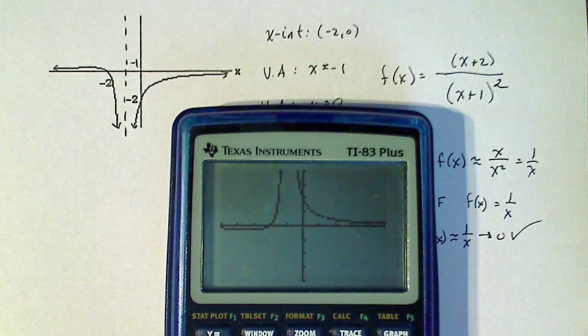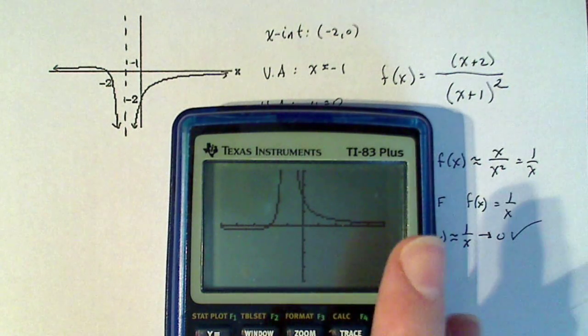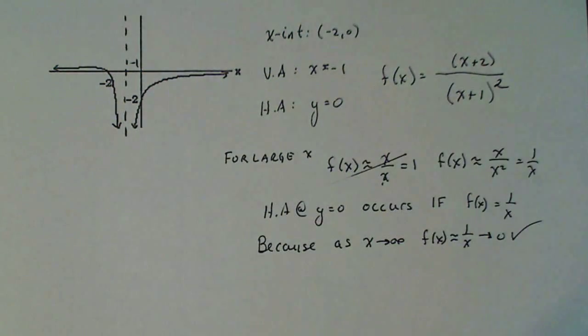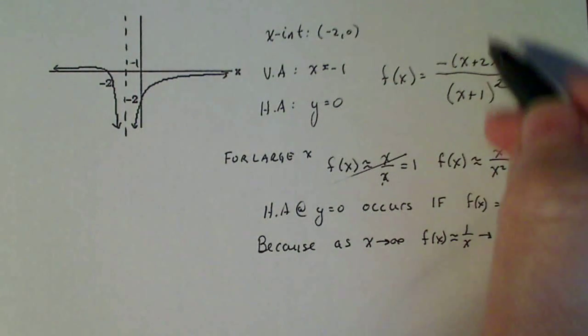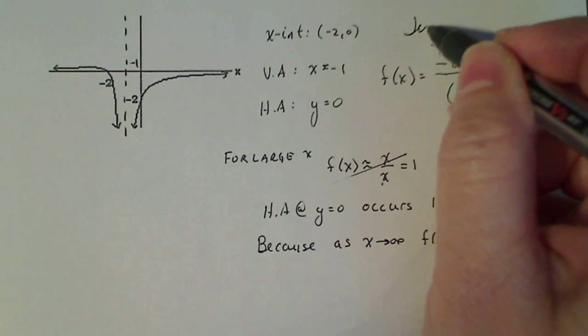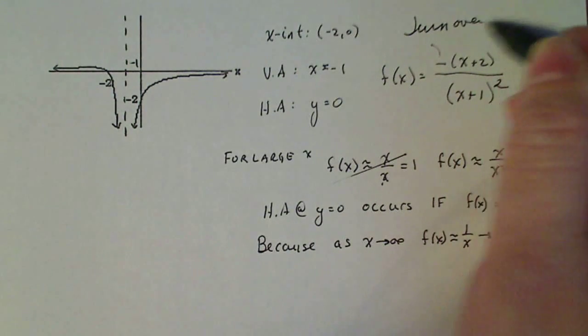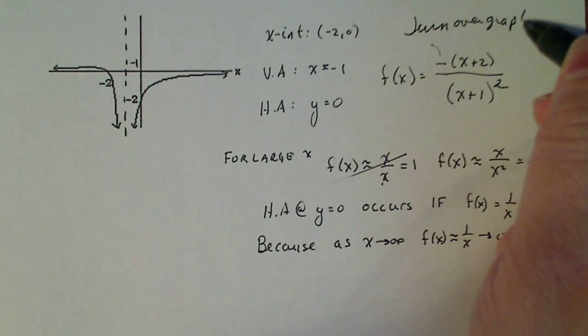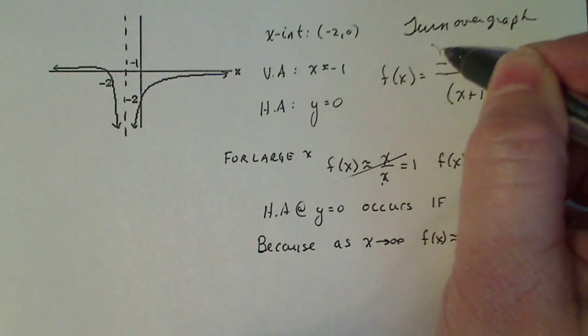So if you remember from transformation of functions, how do you reflect something over the x-axis? Well, you make the whole f of x negative. So this is not something you do really quickly. So this negative comes from trial and error to turn over your graph.